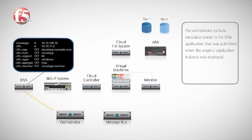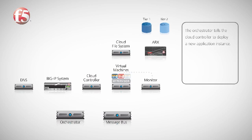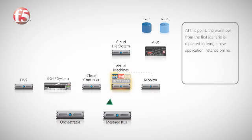In this scenario, the metadata is already available, because it was entered by the server administrator and published in DNS when the application instance was originally deployed. The orchestrator then sends the data it collected to the cloud controller, telling it to deploy a new application instance. From this point on, the same workflow that you saw in the first scenario is repeated, to bring another application instance online that is ready to receive user connections.